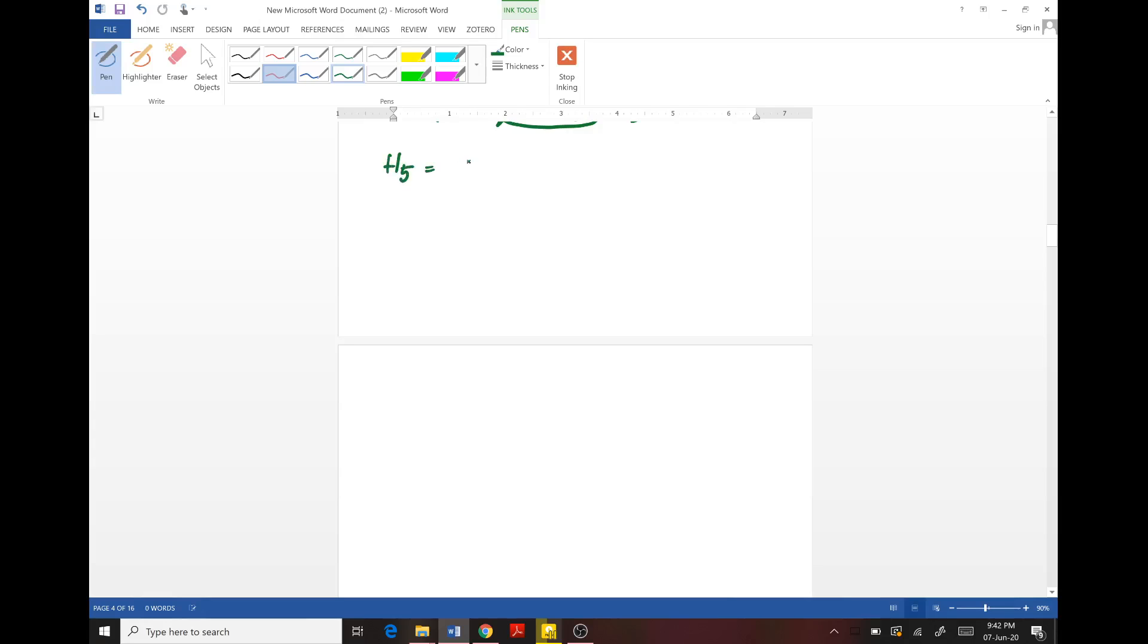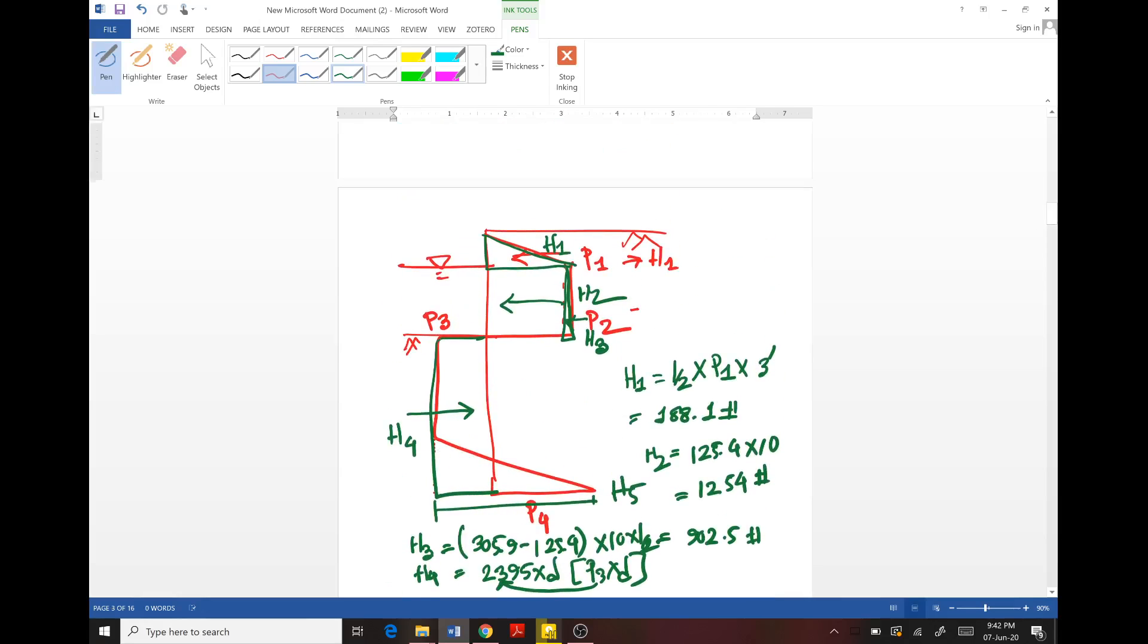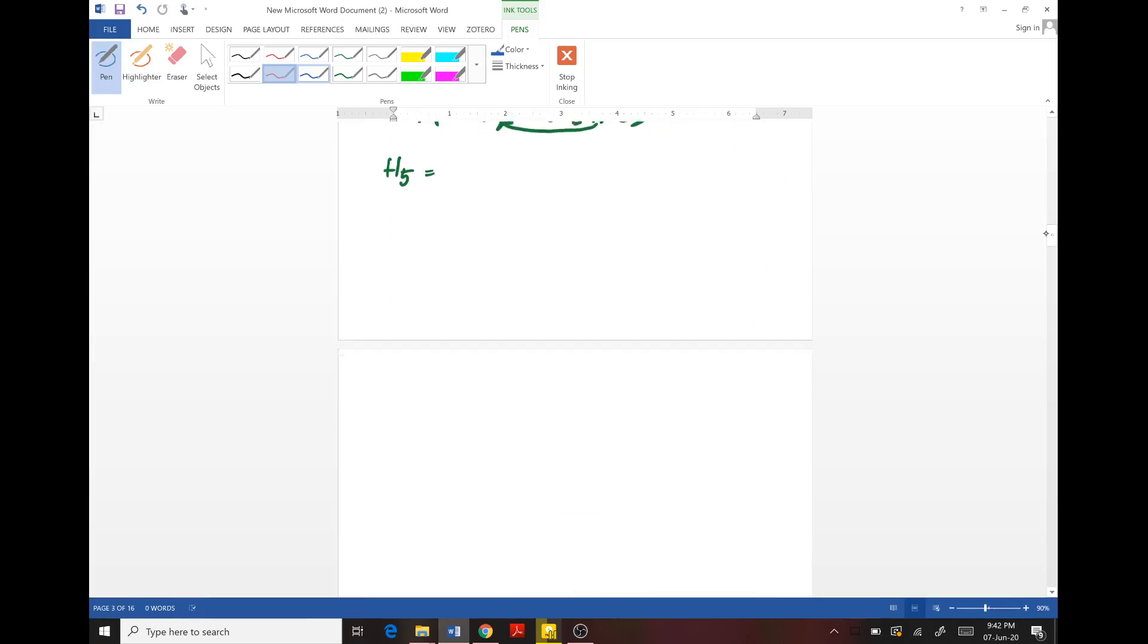H5 is this blue triangle. Let's take the height of this triangle as F, so H5 will be half into F into (2395 plus 4000). Now we will determine the lever arm of the corresponding horizontal forces.